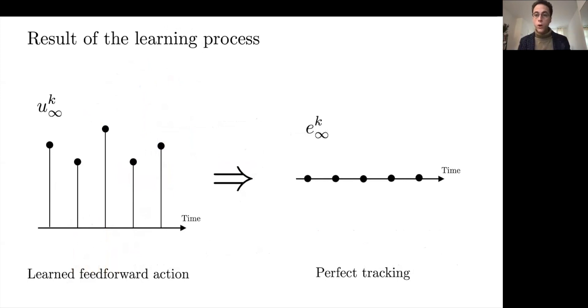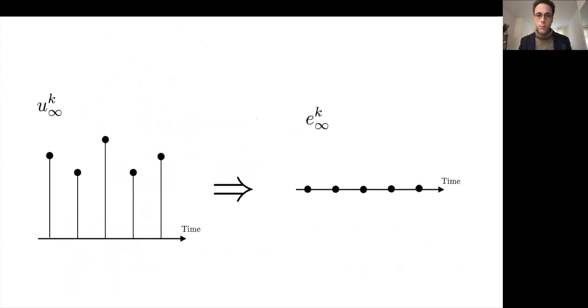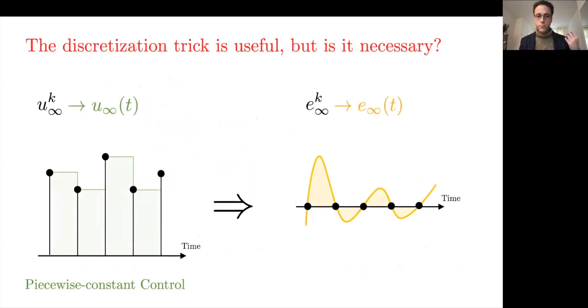But again, if we do a step back and look at what happens in continuous time, what we have is some piecewise constant control that generates zero error at those well-known points. The question that we ask ourselves is, is this discretization trick really needed in iterative learning control?